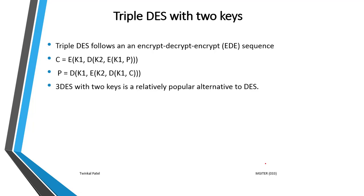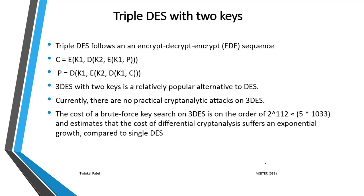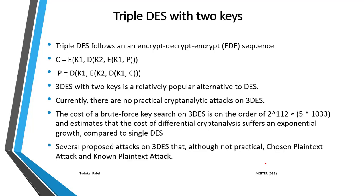Triple DES with two keys is a relatively popular alternative to DES, because currently there is no practical cryptanalysis attack on Triple DES, and the cost of a brute force attack is very high — requiring 2 raised to 112 operations. Several attacks have been proposed on Triple DES, such as known plain text attack and chosen plain text attack, but these attacks are impractical. So Triple DES with two keys is a popular alternative to DES.